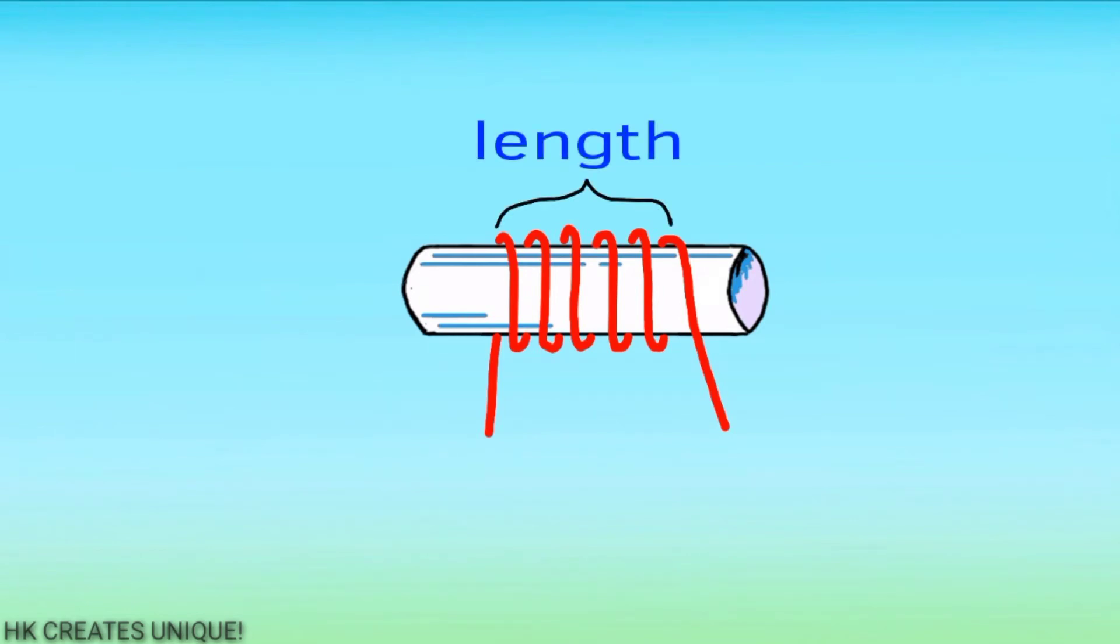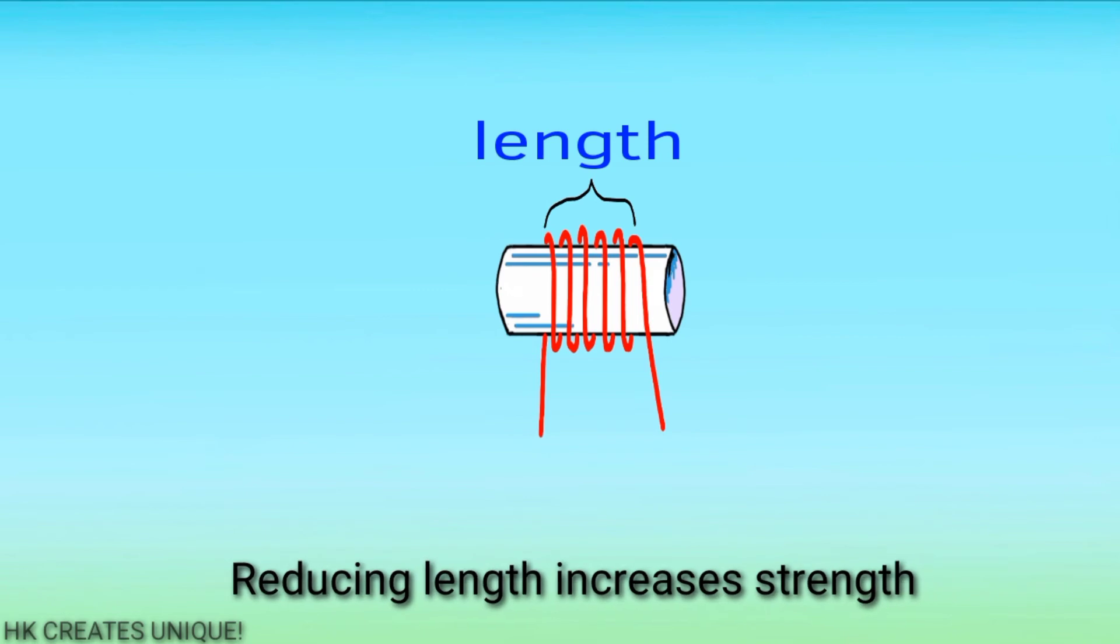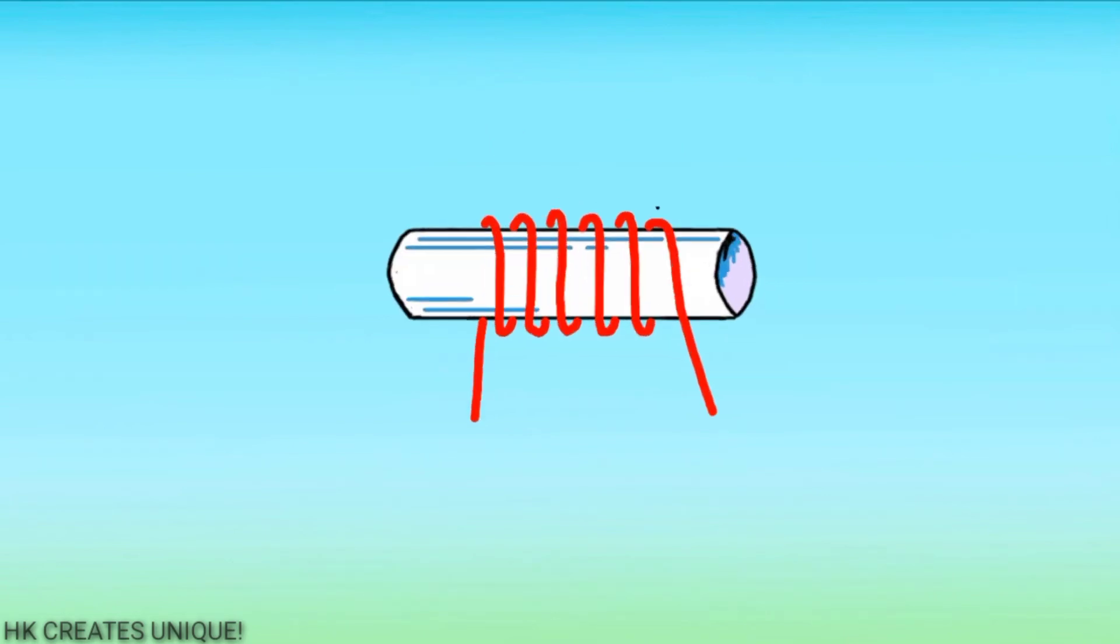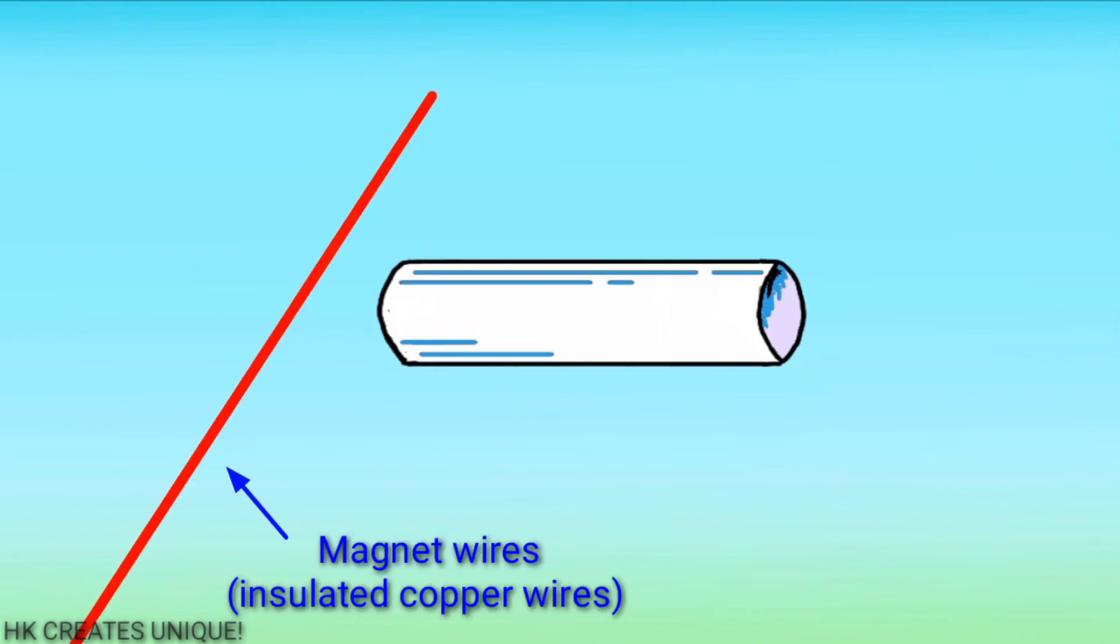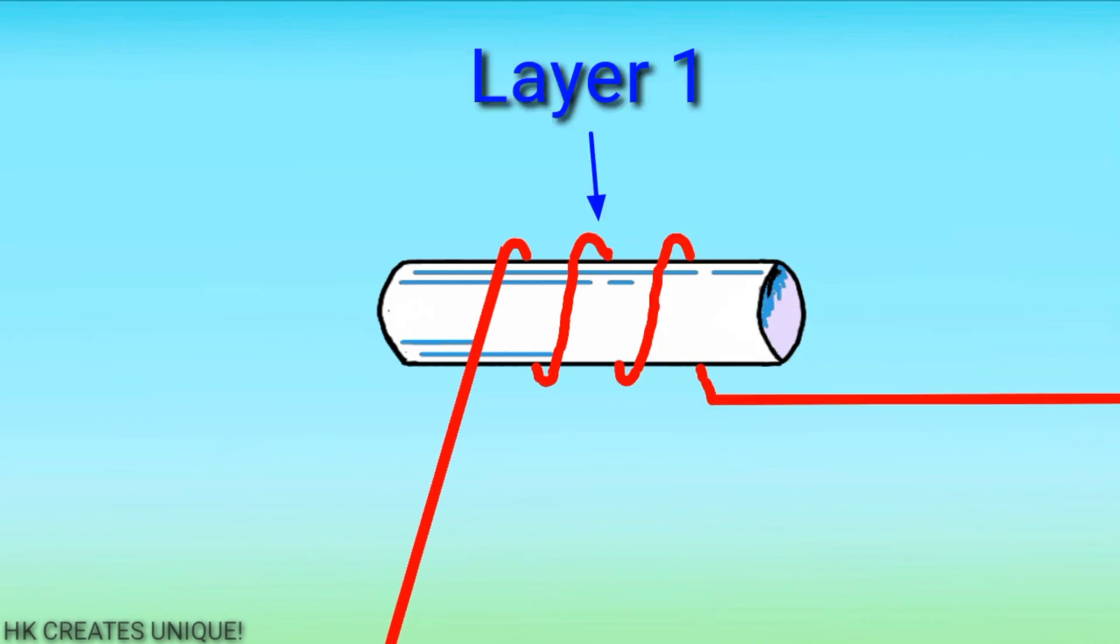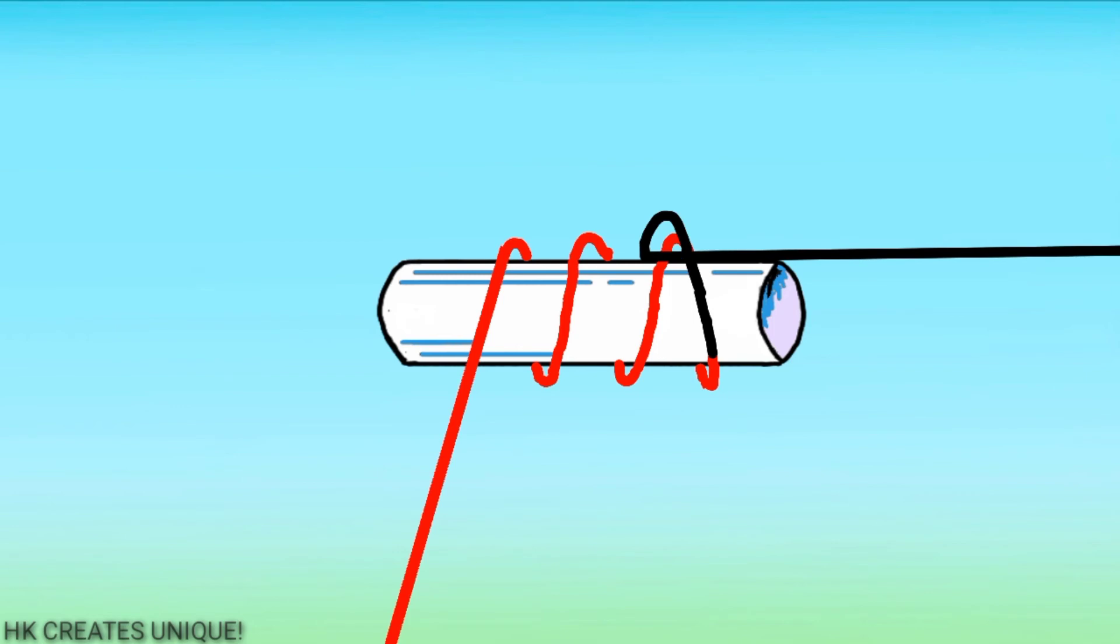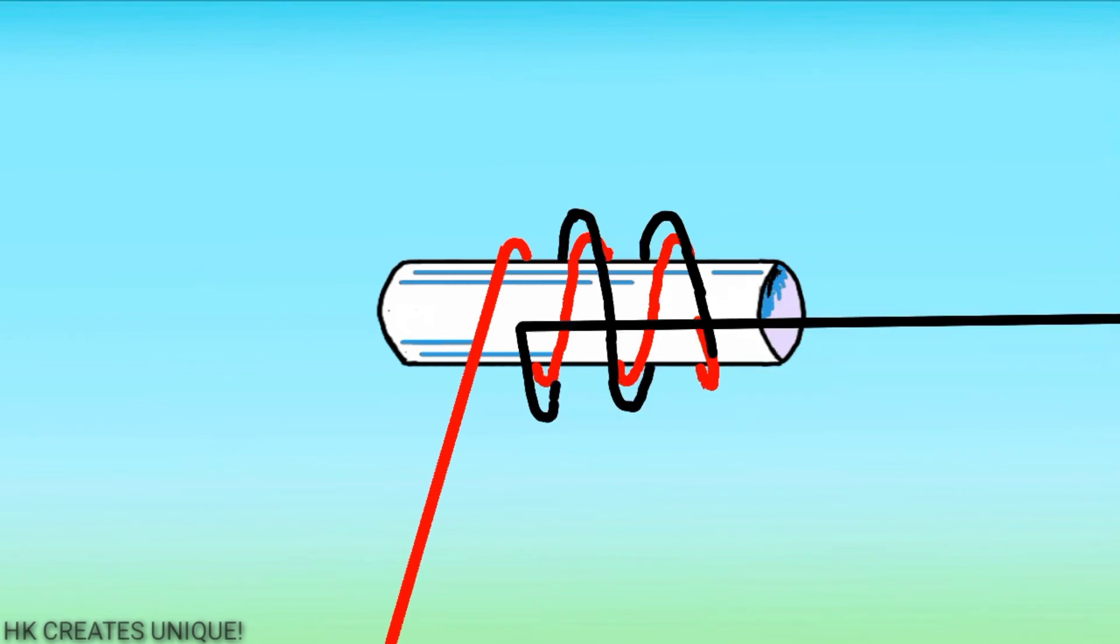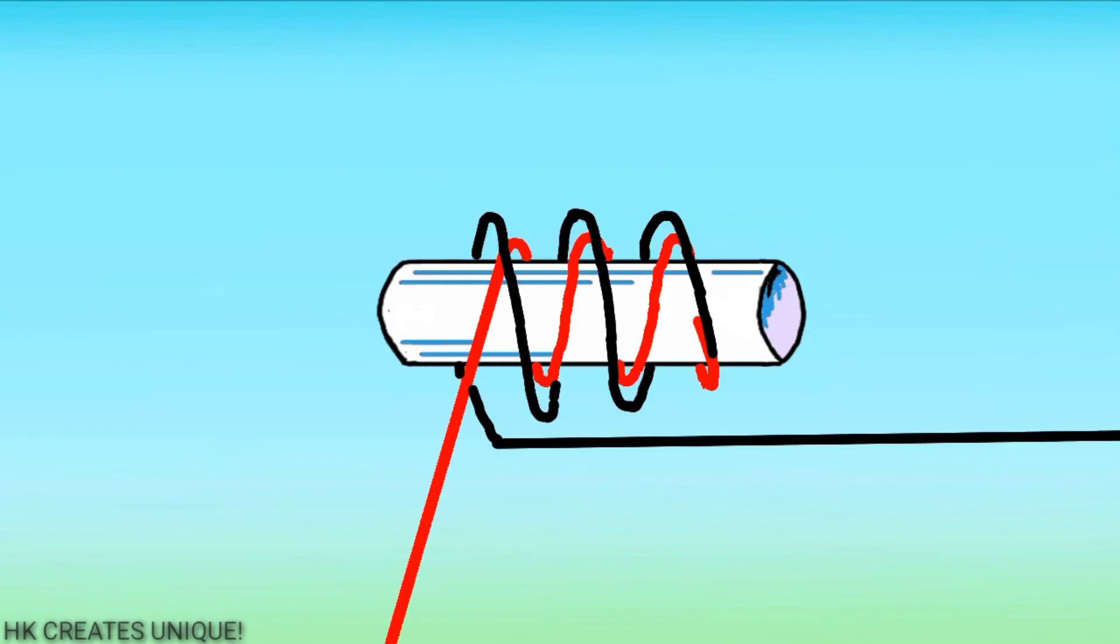You can also reduce length of an electromagnet to increase strength. Also, you can add more layers of magnet wire turns in a given length like this. Basically, what you are doing is increasing the number of turns of magnet wire in the given length. Therefore, it increases strength.